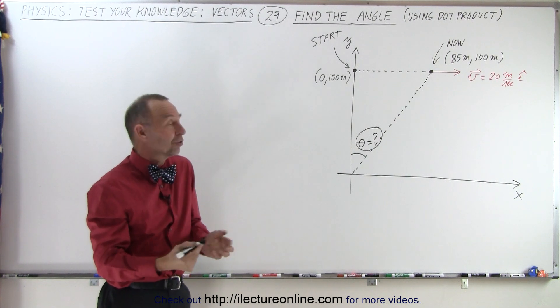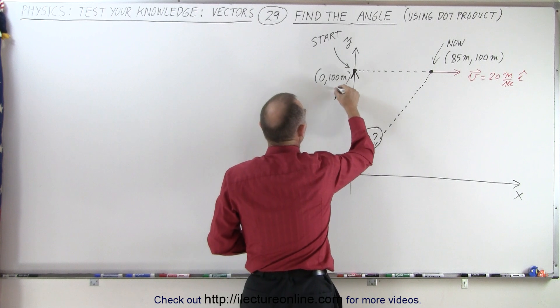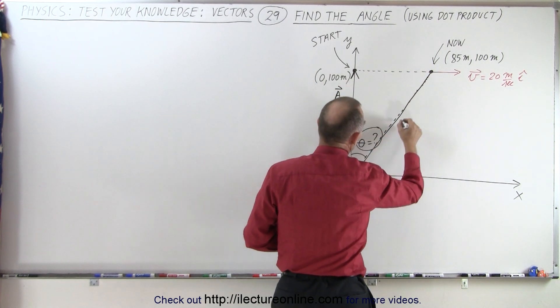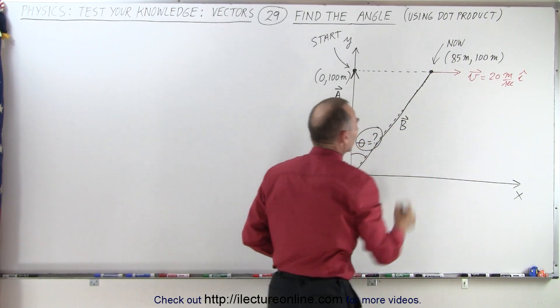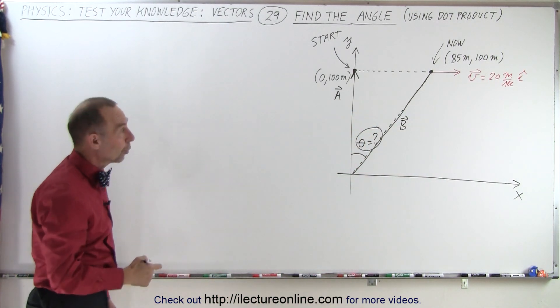So the best thing to do is to define two vectors. Let's define the vector a, and let's define the vector b. So the b vector is really the position vector where the particle is now, and the a vector is the position vector where the particle was when it started.